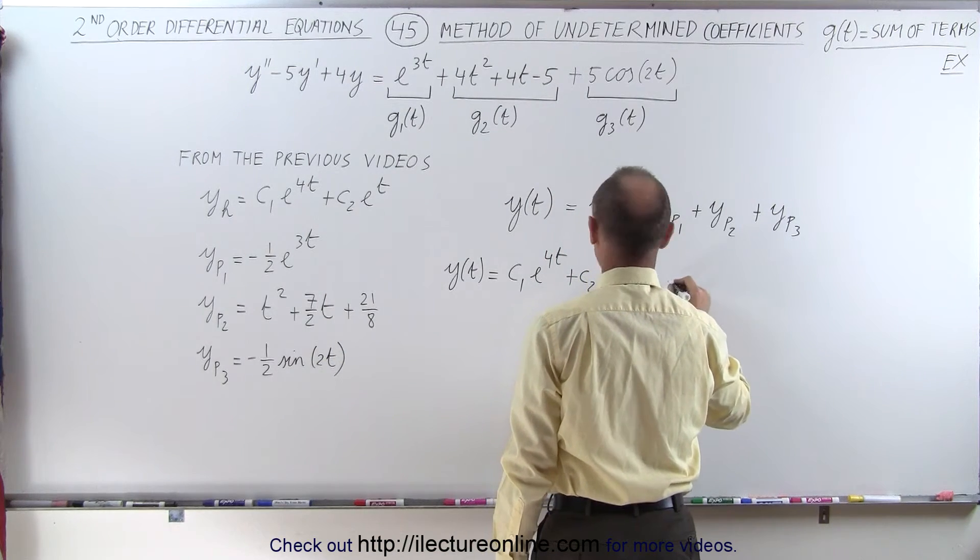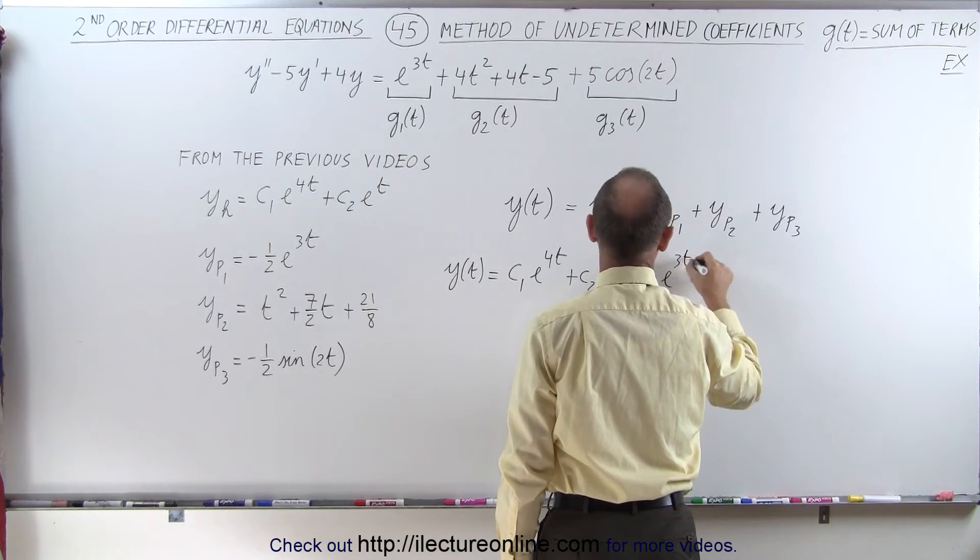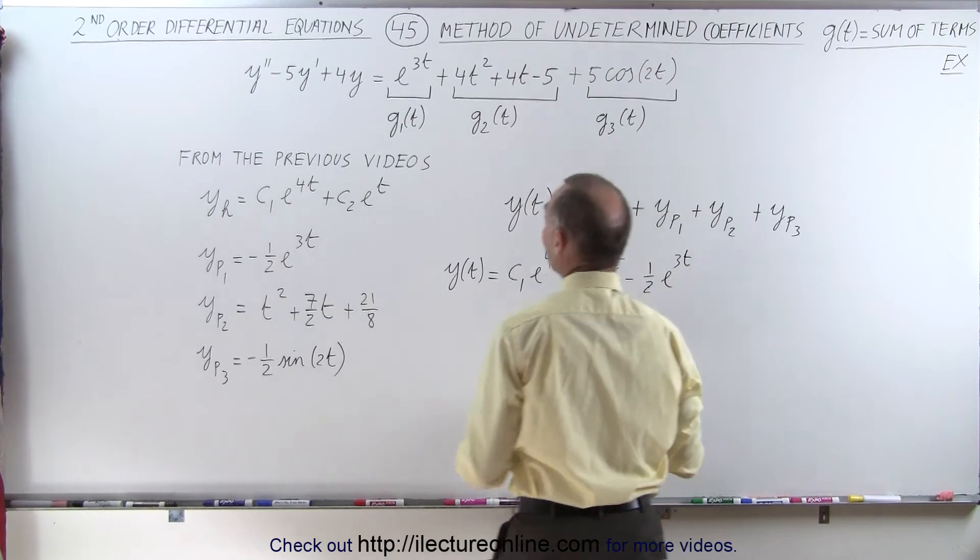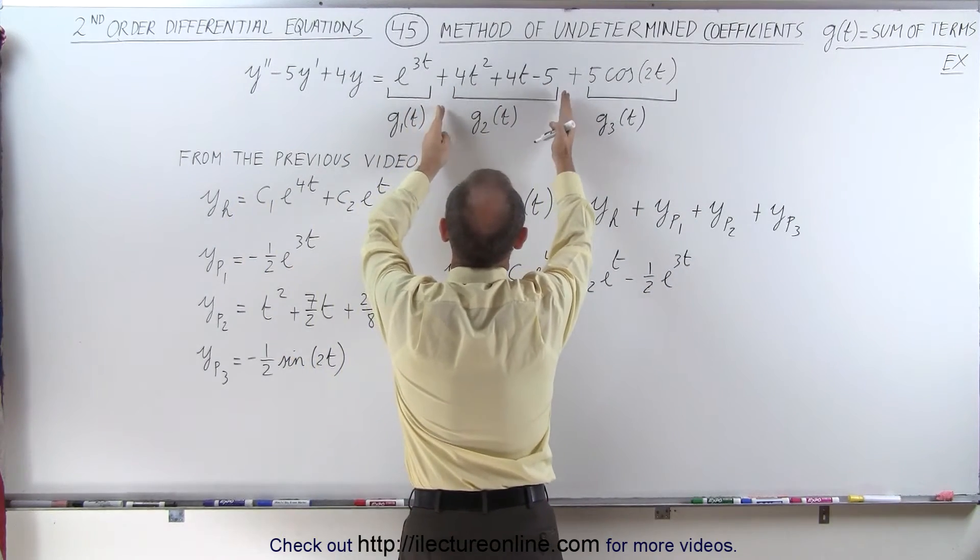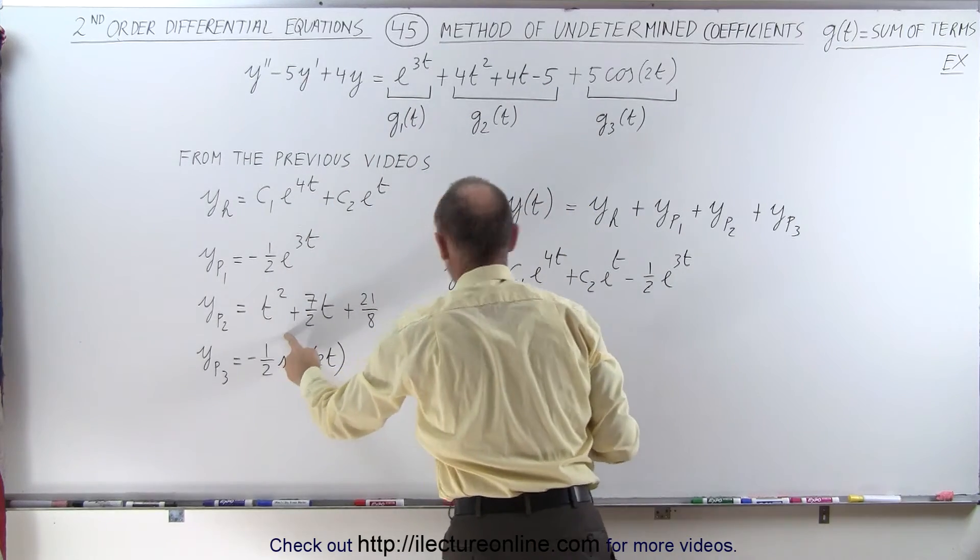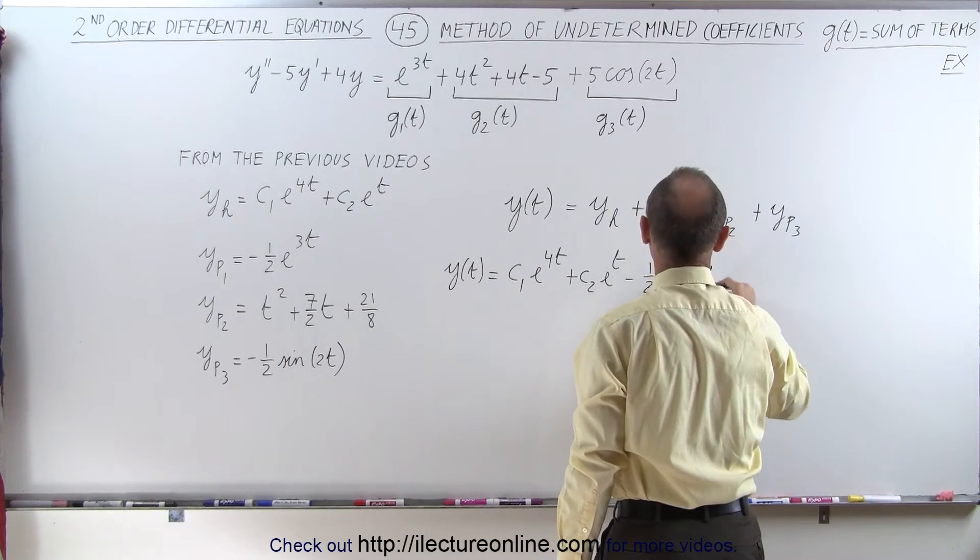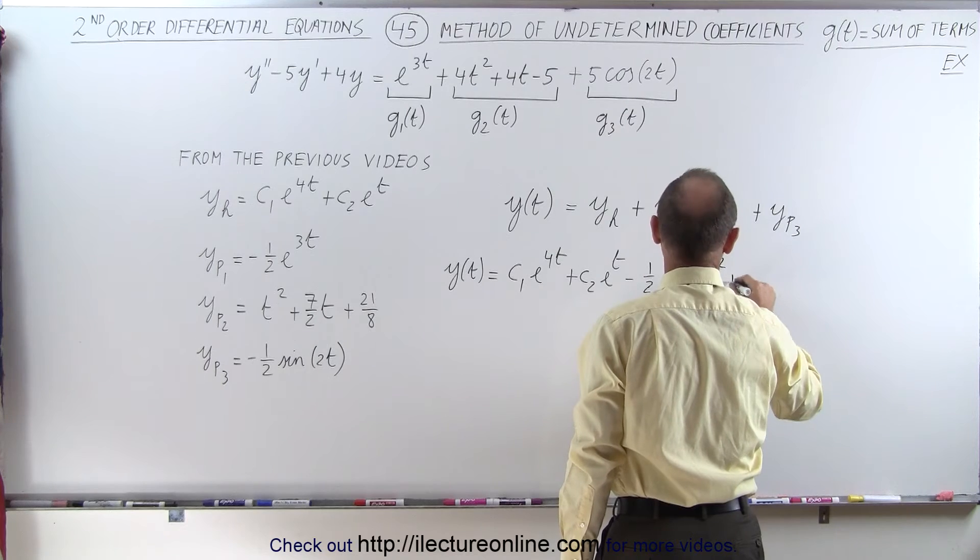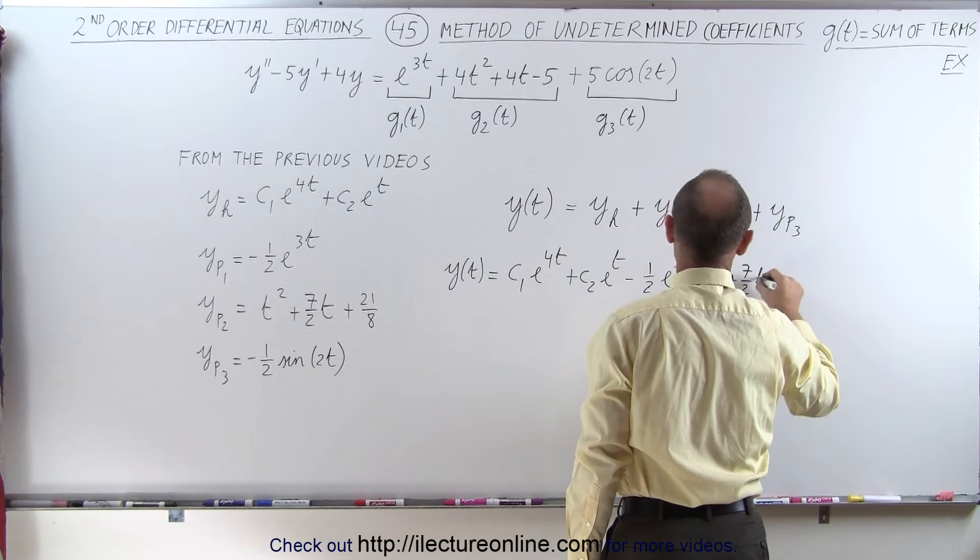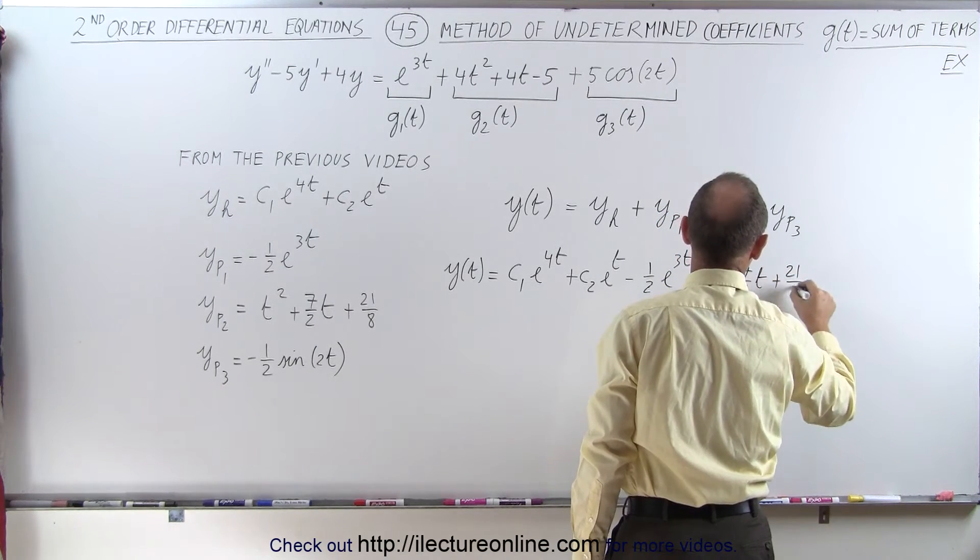minus 1 half e to the 3t, and then we take this equation and only set it equal to this and find a particular solution, which is over here. So it would be plus t squared plus 7 over 2t plus 21 over 8.